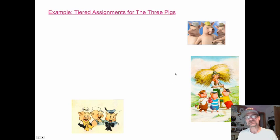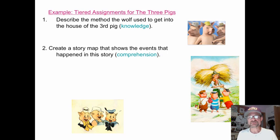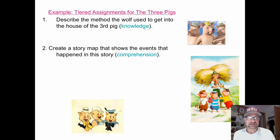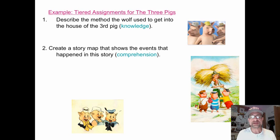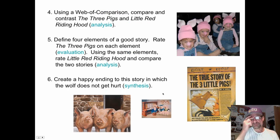An example of a tiered assignment for The Three Pigs: At the basic low level, describe the method the wolf used to get into the house. At the comprehension level, create a story map showing the events that happened in the story — this also incorporates visual intelligence. At the application level, create a one-minute mime drama that shows how the wolf tried to get the three pigs' house and what happened.